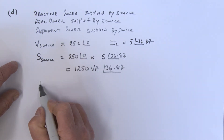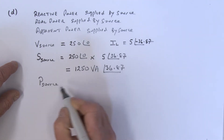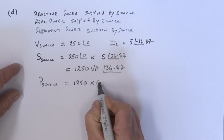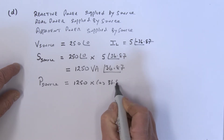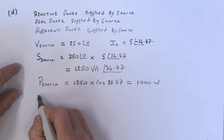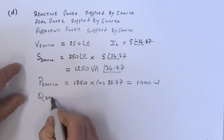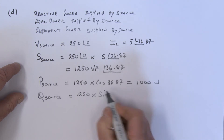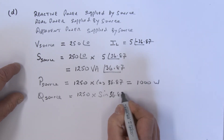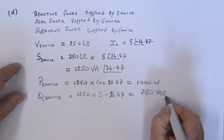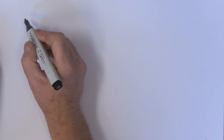Knowing the angle and power factor, the real power supplied by the source is 1250 multiplied by cosine of 36.87 degrees, which equals 1000 watts. The reactive power supplied by the source is 1250 multiplied by sine of 36.87 degrees, which equals 750 volt-amps reactive.